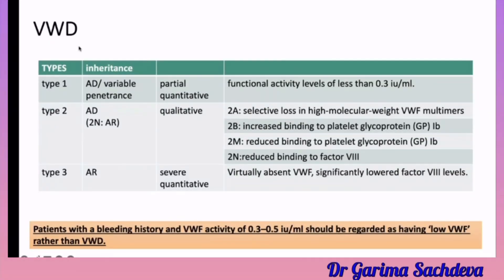There are three types of von Willebrand disease: type 1, type 2, and type 3. Type 1 is autosomal dominant and is the least severe — it is a partial quantitative deficiency where factor activity is less than 0.3. Type 2 is qualitative and can be autosomal dominant or recessive; it is divided into 2a, 2b, 2m, and 2n. Type 3 is autosomal recessive and is the most severe.